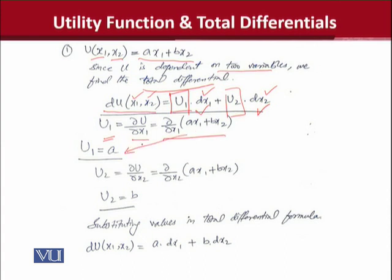And now we have u2 which can be found in a similar fashion, and that is to take the partial derivative with respect to x2, which we have done here, and its answer is b.